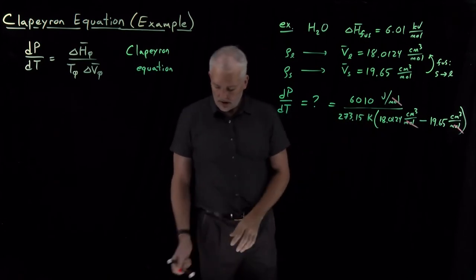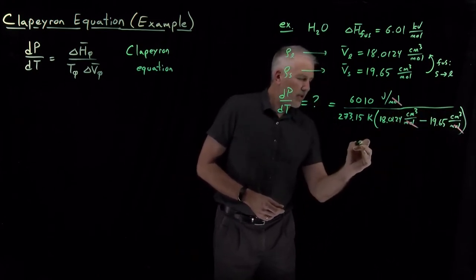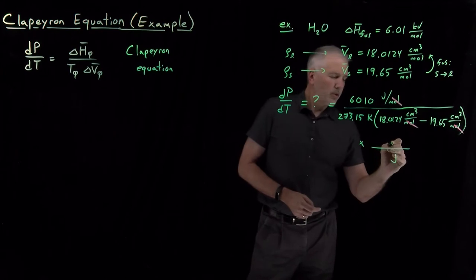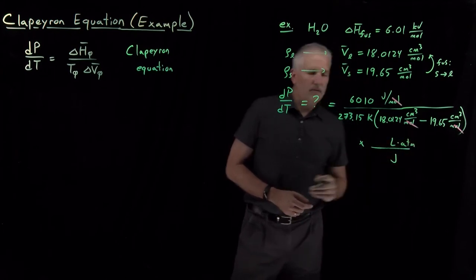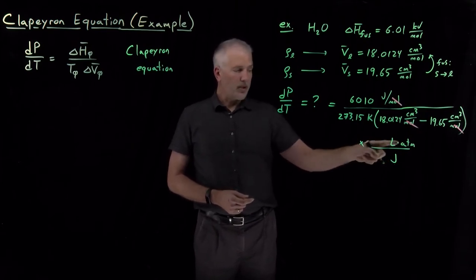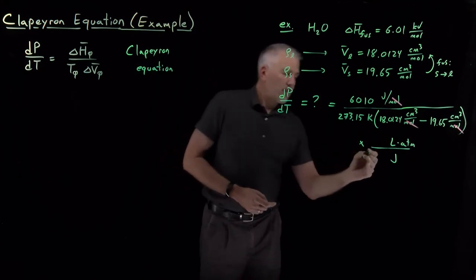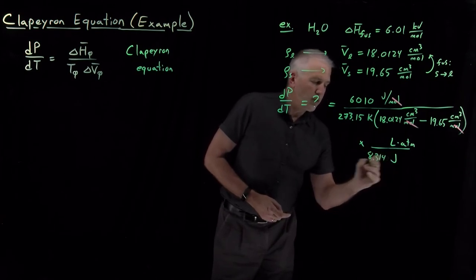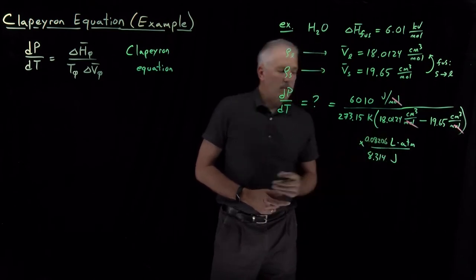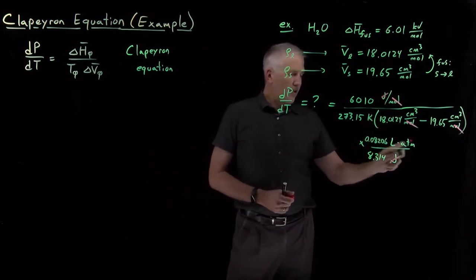We can, however, do some unit conversion. Let's multiply this whole thing by, a joule is not equivalent to a cubic centimeter, but a joule is equivalent to some number of liter atmospheres. Remember, energy can be expressed in units of joules or as a pressure volume product as liter atmospheres. We're recalling the values of the gas constant. The gas constant is either 8.314 in units of joules per mole Kelvin or 0.08206 in units of liter atmospheres per mole Kelvin.